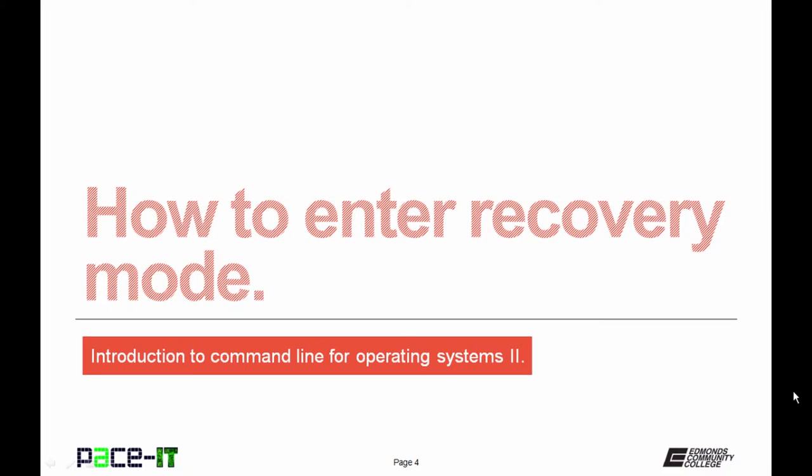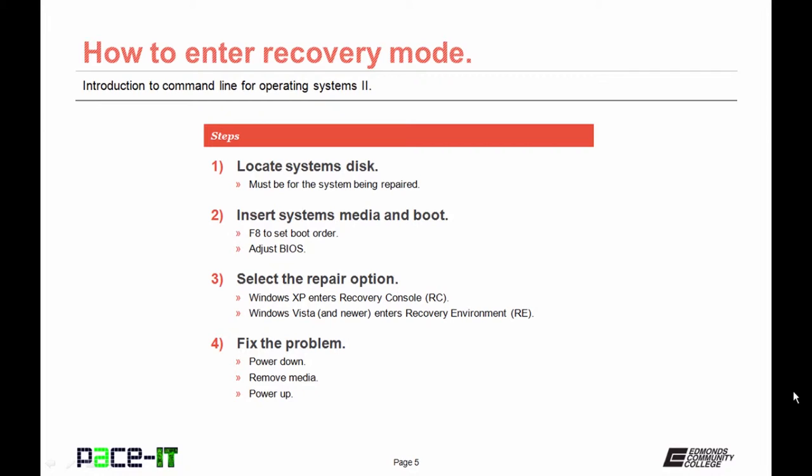We're going to begin this session by talking about how to enter the recovery mode, which is where you want to be if your system will not boot up. The first thing that you're going to need are your system's disks — you're going to need the operating system, and it needs to be the same disks as the operating system that you're trying to repair. Then you need to insert the media, whether it be USB or CD, and boot to that media.